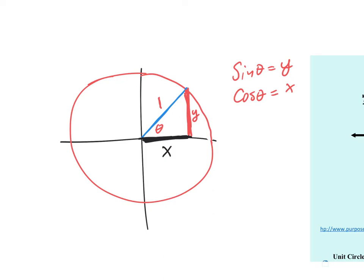Sine is the y-value and cosine is the x-value. That leaves tangent — TOA — tangent is y over x. Write it down if you haven't already: sine is y, cosine is x, and tangent is y over x.